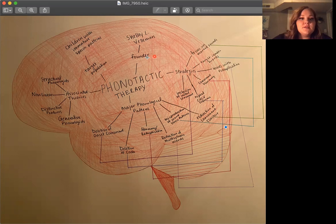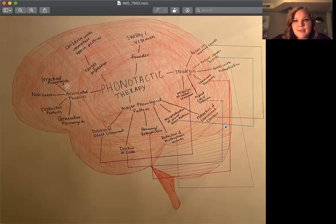The target population is children with amateur speech patterns who are usually unintelligible. The associated theories - structural phonologists focused on the functional role of phonemes, like phonemes versus allophones, and this was in the 1950s.